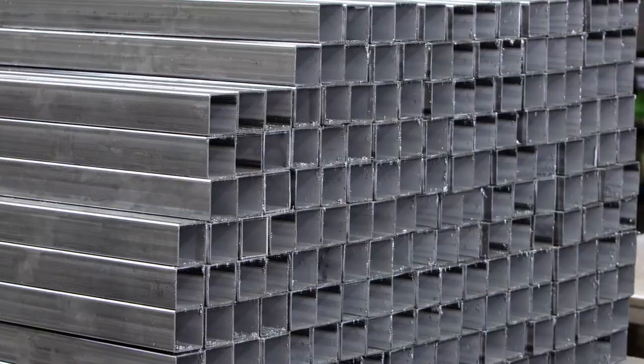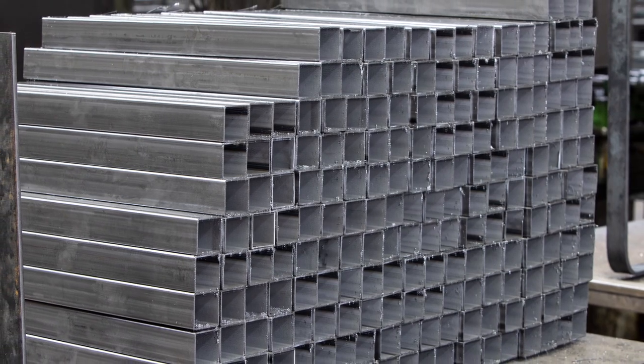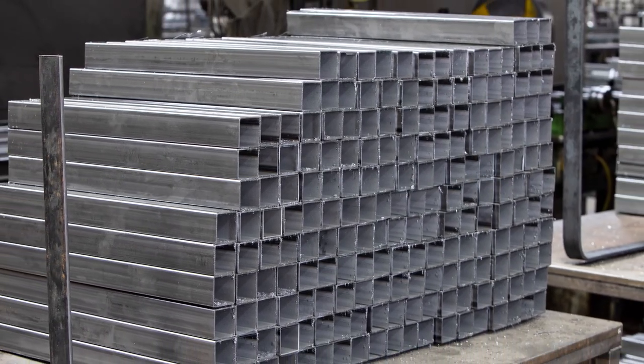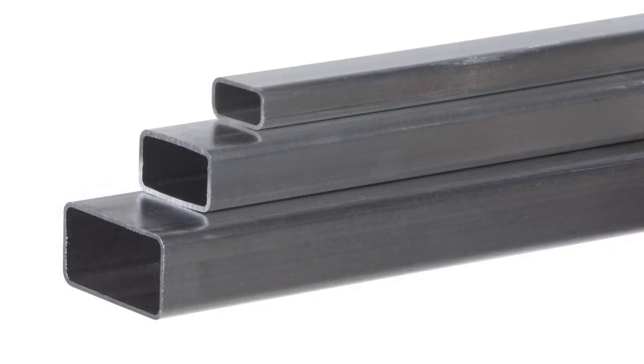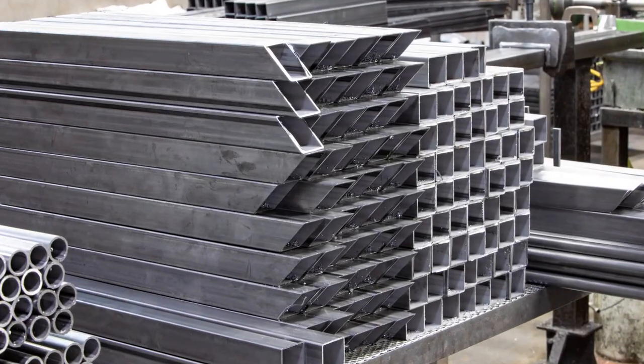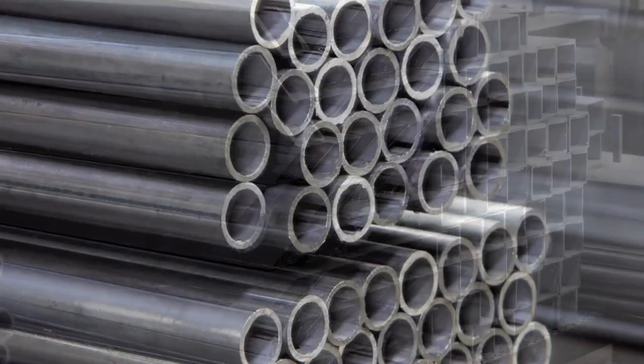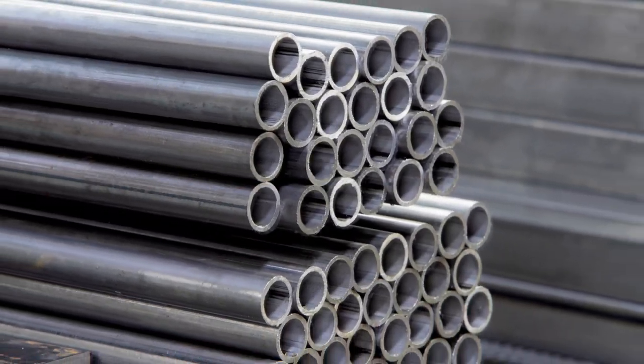O.W. Lee Company uses only the highest quality materials in the production of their furniture. Carbon steel, galvanized steel, and 6061 alloy aluminum are meticulously chosen for superior strength as well as rust and corrosion resistance.